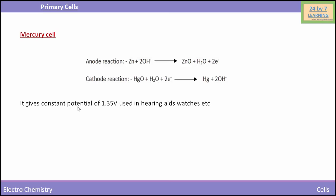This is the anode reaction and this is the cathode reaction. Mercury cell gives a constant potential of 1.35 volts and is used in hearing aids, watches, etc. So students, this is all about primary cells.